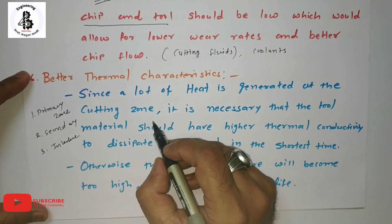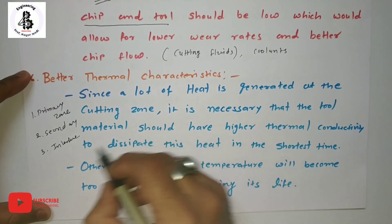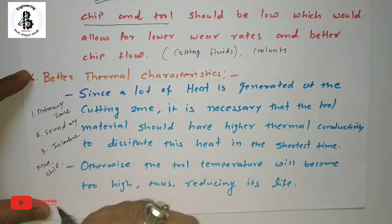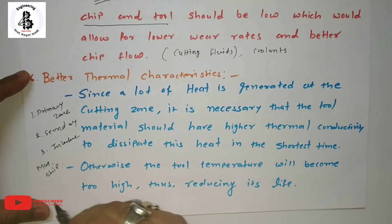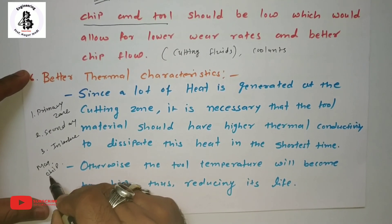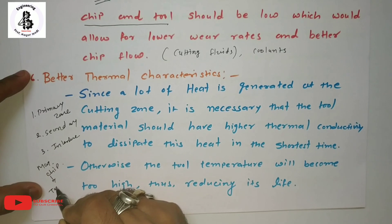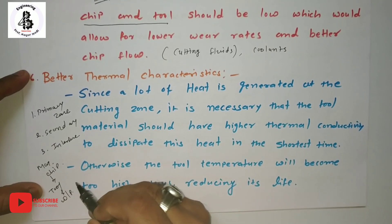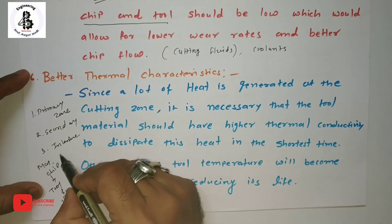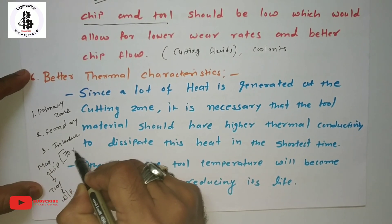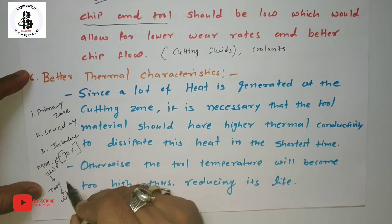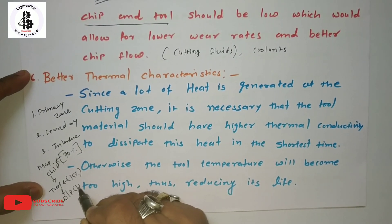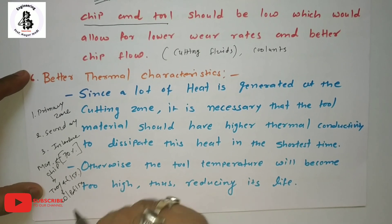The maximum temperature occurs at the chip. The heat distribution is approximately: 70 percent of the heat goes into the chip, 15 percent into the tool, and 15 percent into the workpiece material.